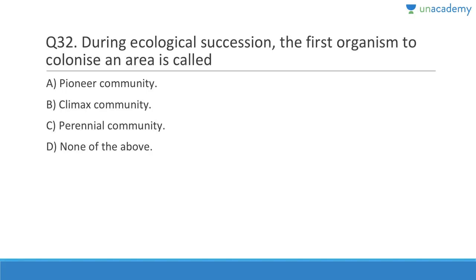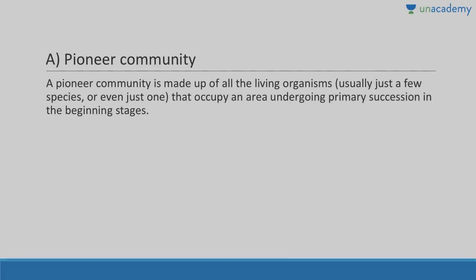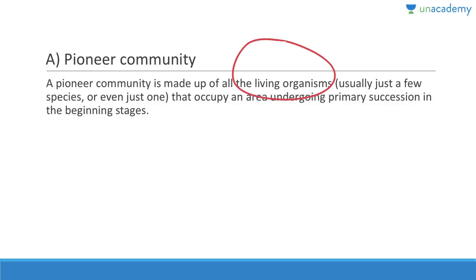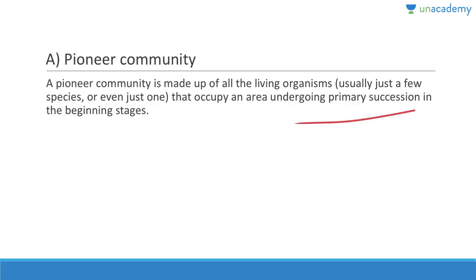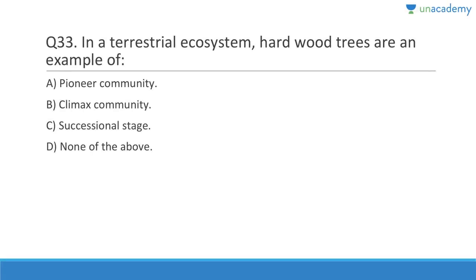Question 32: The first organisms to colonize an area during ecological succession are called pioneer species. They are made up of all the living organisms — usually just a few species or even just one — that occupy an area undergoing primary succession in the beginning stages. Examples include lichens.